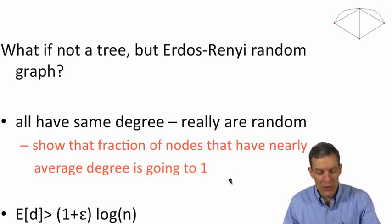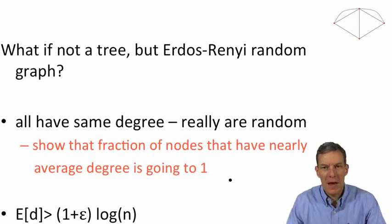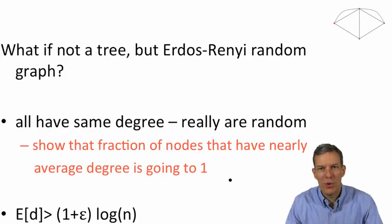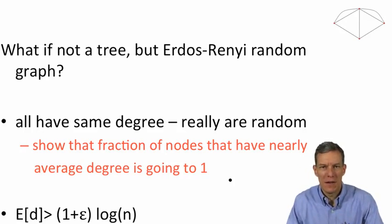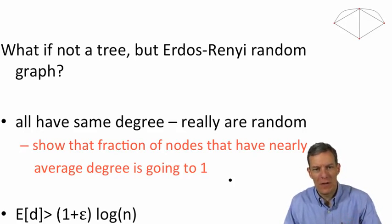And the difficulty with this was, well, not everybody would have the same degree. So let's suppose now we had, instead of a tree, we had a tree where the degree was randomly varying, and not everybody had exactly the same degree.